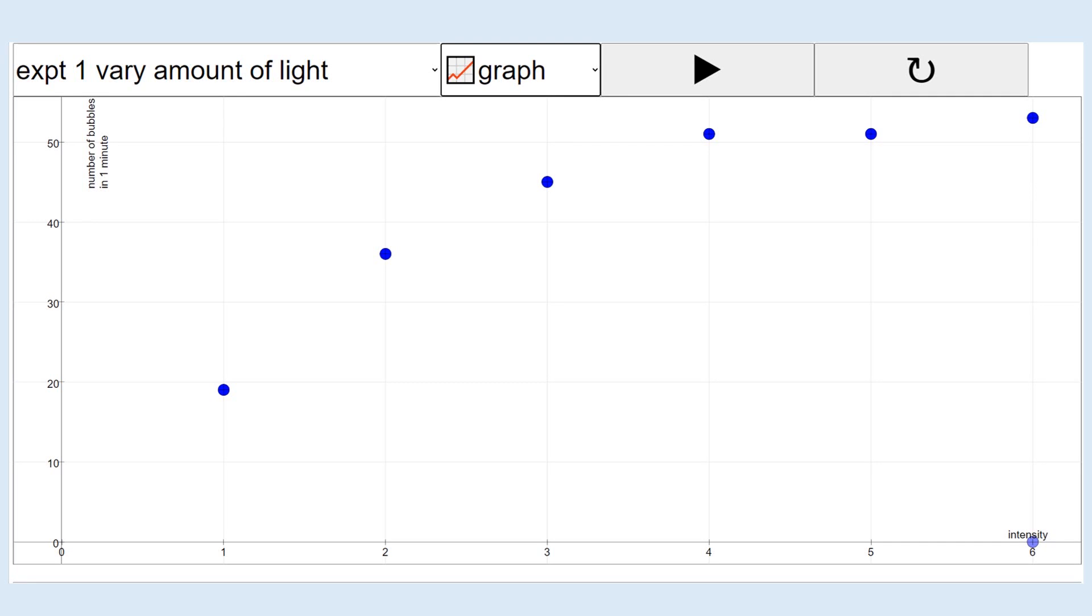We can see there's a clear positive correlation at first. As the light intensity increases, the number of bubbles produced in one minute also increases.